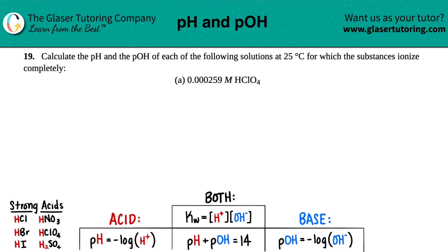Number 19, calculate the pH and the pOH of each of the following solutions at 25 degrees Celsius for which the substances ionize completely, and then we have letter A.